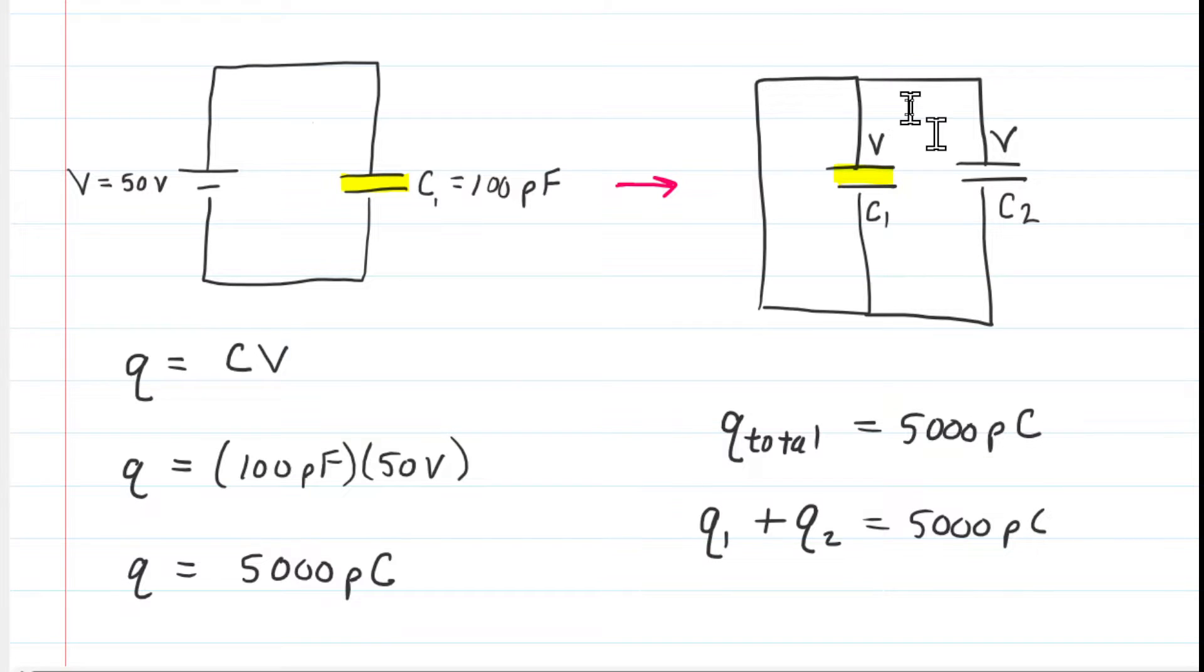We've labeled the potential difference across the plates as being V. Another key to this question is to understand that when you have two capacitors that are in parallel with one another, the potential difference across their plates is the same.